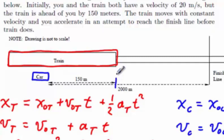Another reasonable location would be here, to define the line of x equals 0 such that the car has a negative 150 meter x0 and the train has a 0.